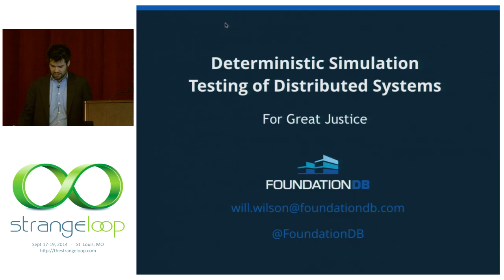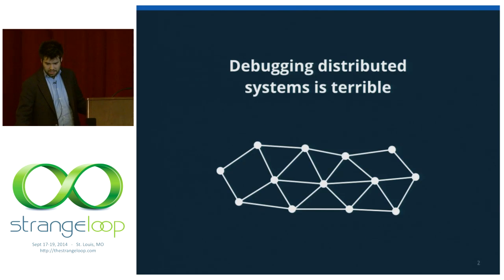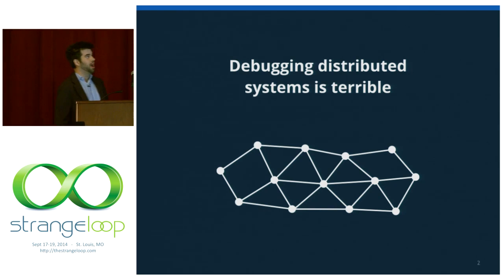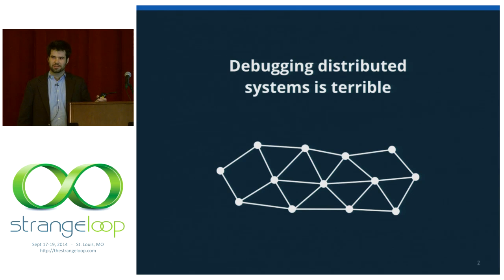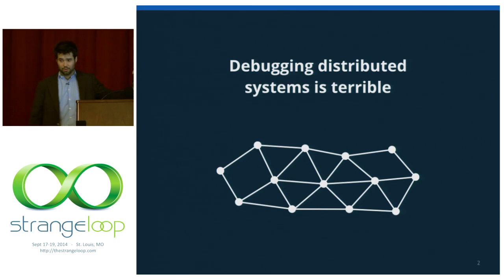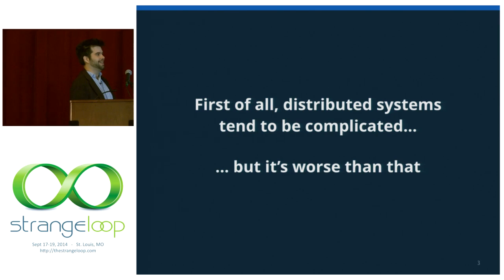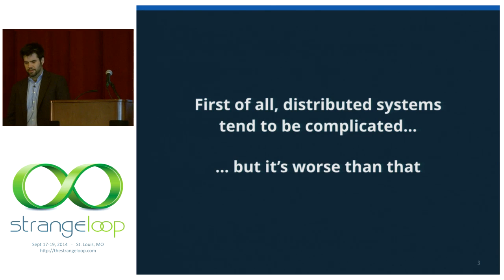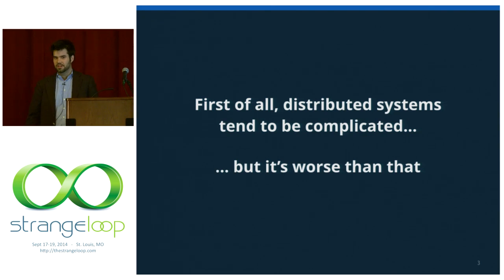I want to start with an observation which I hope everybody here agrees with, which is that debugging distributed systems is preferable to sticking a fork in your eye. But not that preferable. It's actually surprisingly close. And people will tell you a lot of reasons why this is true. One of the most common ones I hear is it's because they're complicated. And I'll grant that it's true, they are complicated. And debugging complicated stuff is harder than debugging simple stuff. But I want to propose that this is not the real reason why they're really hard to debug.